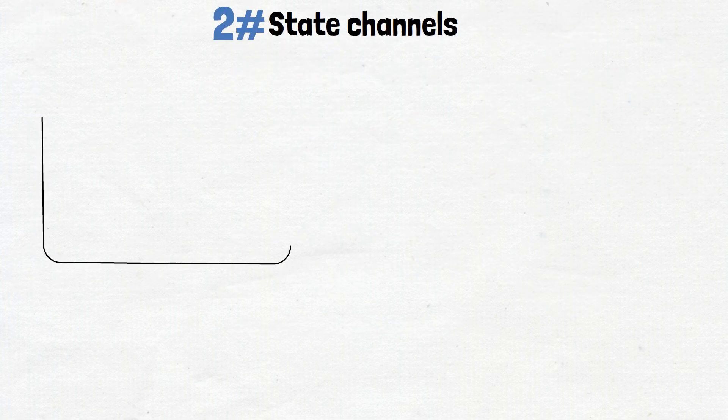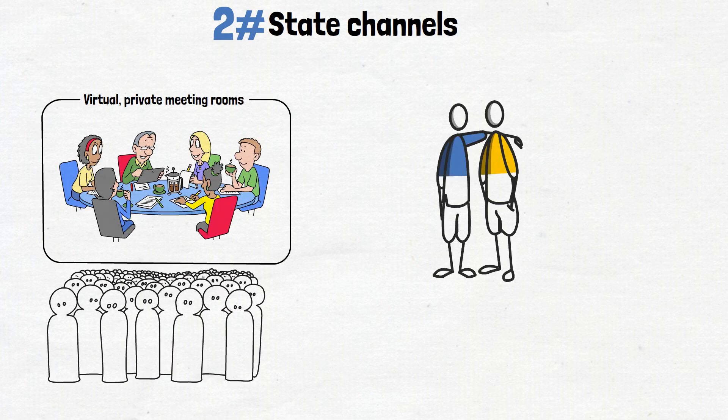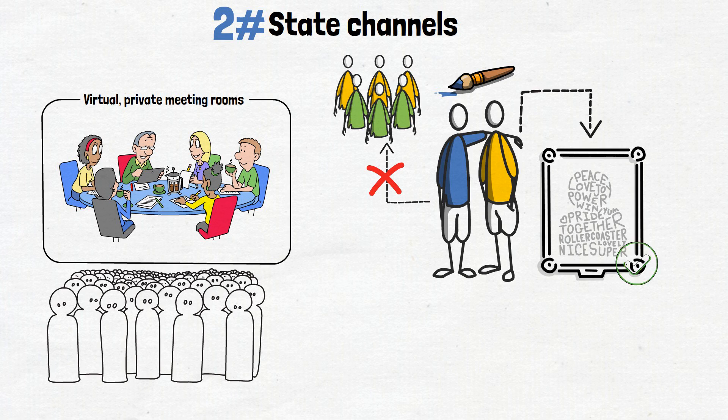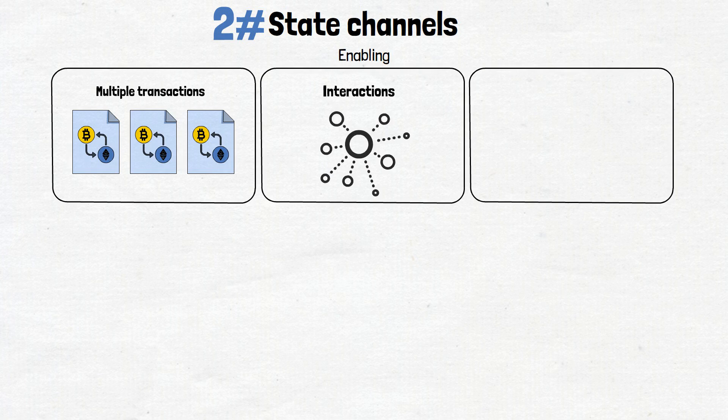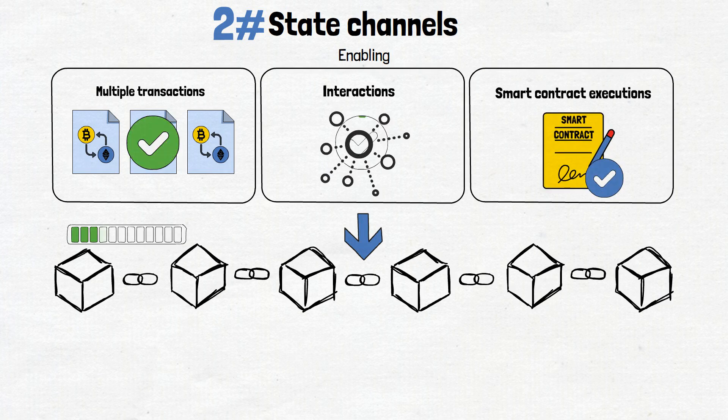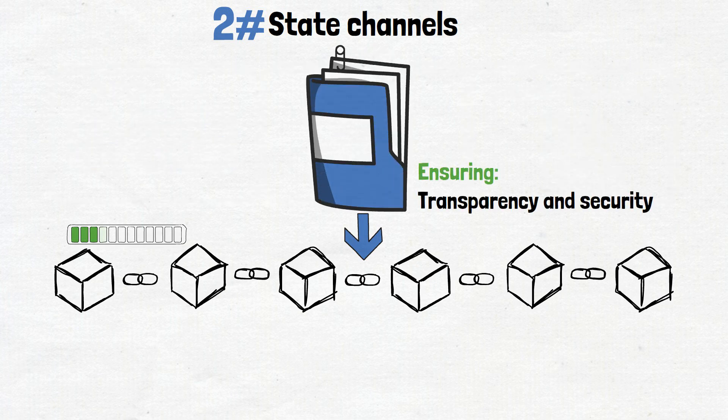Moving along, we have state channels. Think of them as virtual private meeting rooms, where multiple people can have discussions away from public view. Imagine you and a friend want to collaborate on designing a digital artwork together, without sharing anything with anyone. After all, your goal is to reveal the final piece, not the process. So, you'll work on your project in a private place. State channels create these private spaces, enabling multiple transactions, interactions and smart contract executions, without congesting the main blockchain. Once all of the collaboration is completed, the final masterpiece is recorded on Layer 1, ensuring transparency and security.